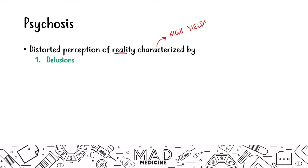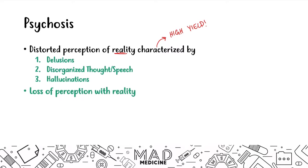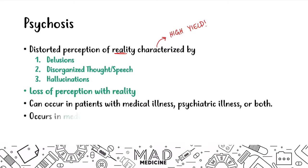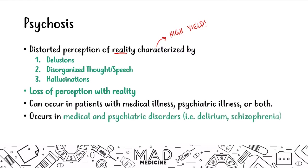The first one is going to be delusions — patients are going to be delusional when they are psychotic. They're going to have disorganized thought or speech; they're not going to be talking or thinking clearly. And they're also going to have hallucinations. In psychosis, patients have a loss of perception with reality. In contrast, in delirium, patients have reality intact — they understand what's real and what isn't, they're just not able to speak too clearly. But in psychosis, they don't realize what's real. This can happen in patients with medical illnesses or psychiatric illnesses such as delirium or schizophrenia.